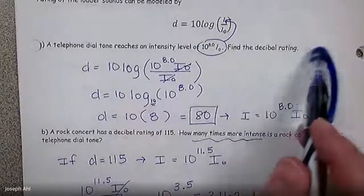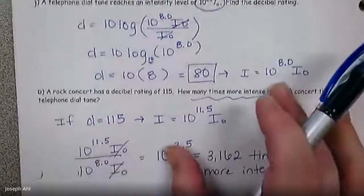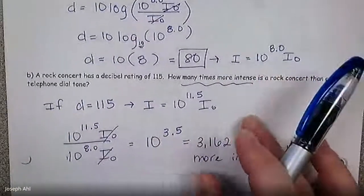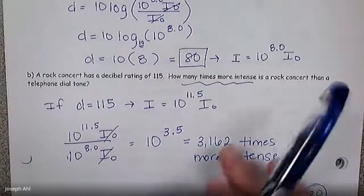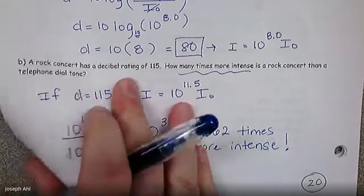So you can see how increasing that decibel rating from 80 to 150, it doesn't seem like it's going to be 3,000 more times intense, but because in order for a log function to grow that much, you have to increase the intensity by that much. Log growth is really slow. Think about what log functions look like. Do you see the path I'm tracing with my pen? That's what a log function looks like.